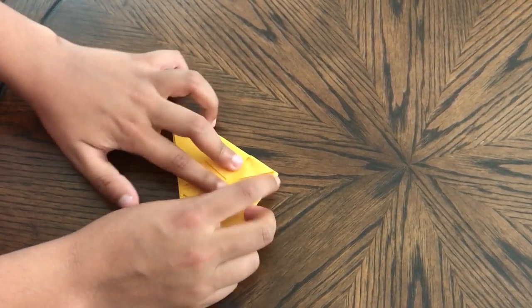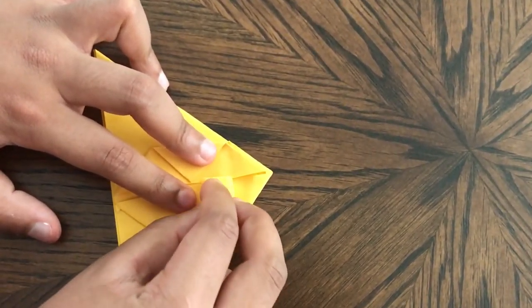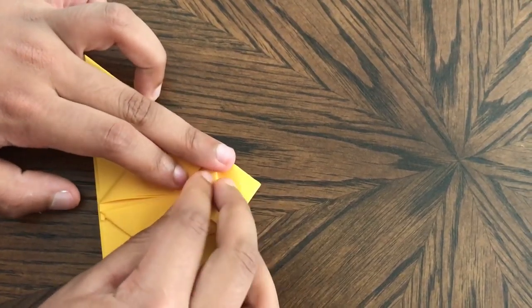So now these two triangles, what you're going to do is fold them in half like this. And repeat on this side.